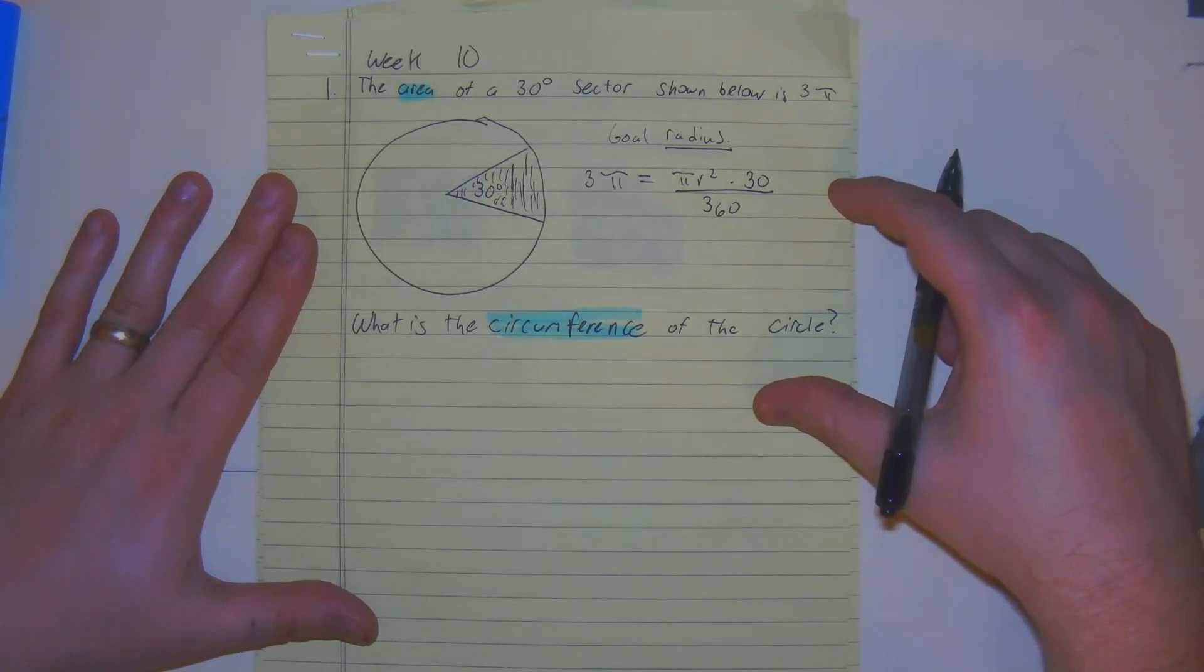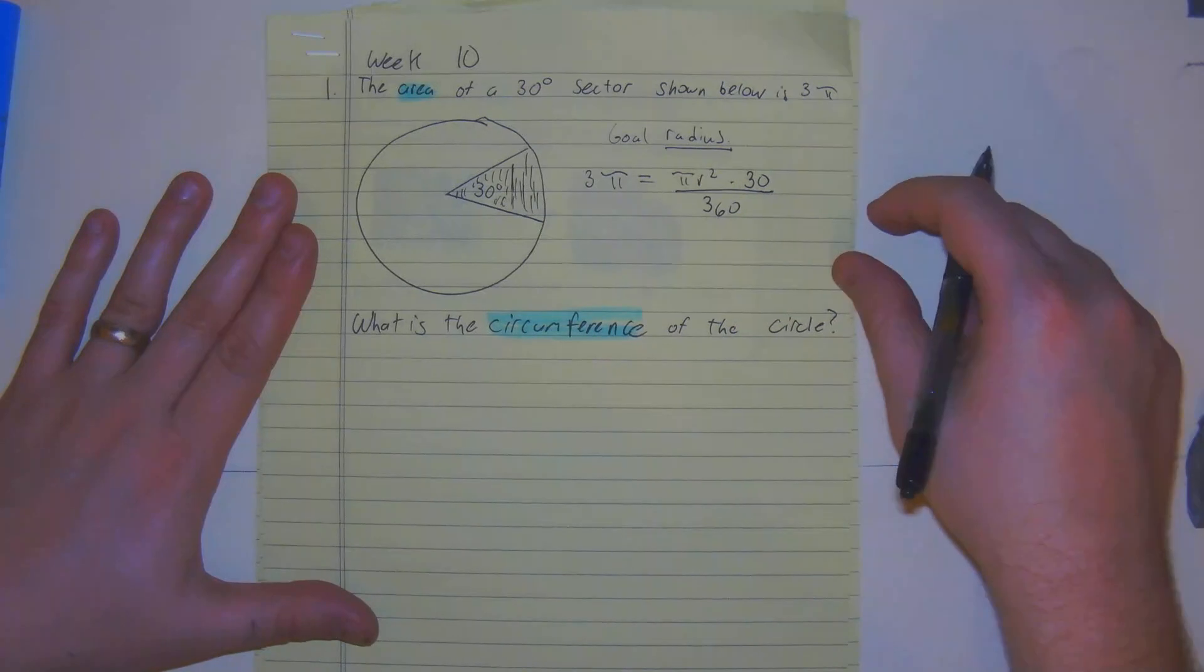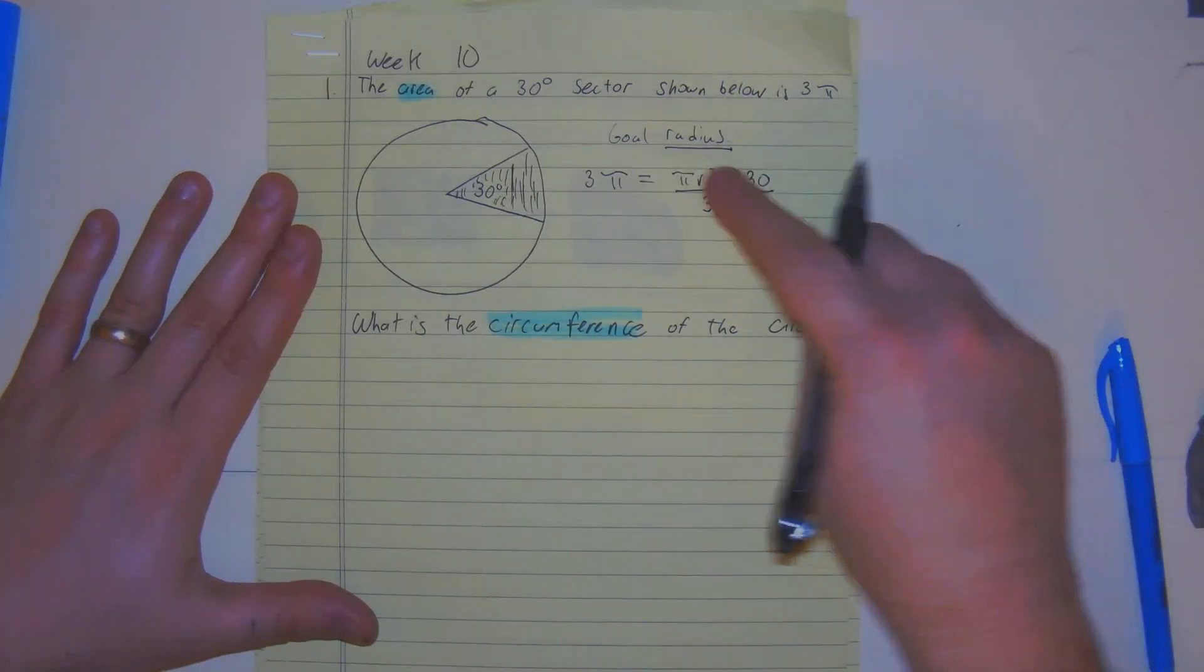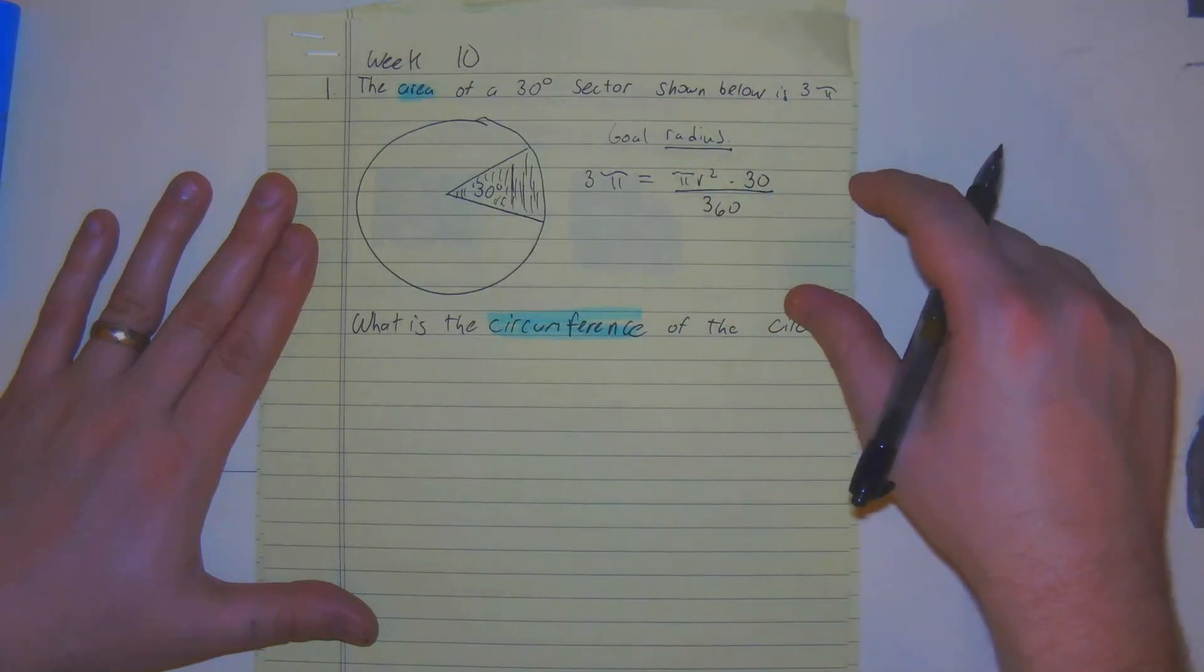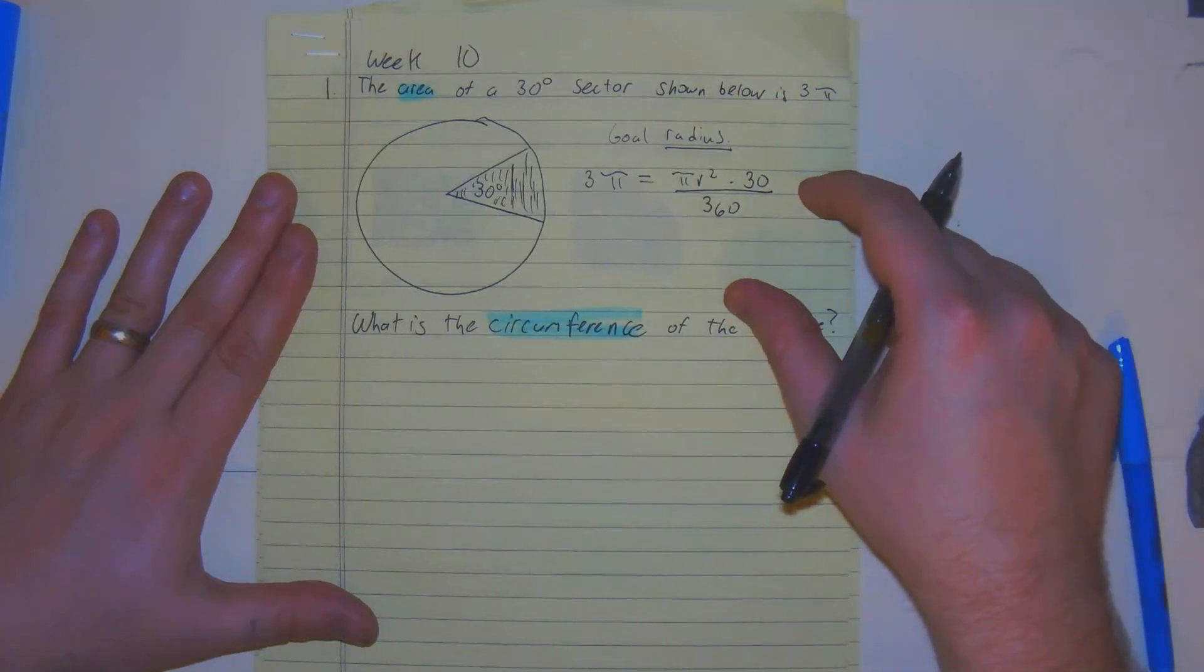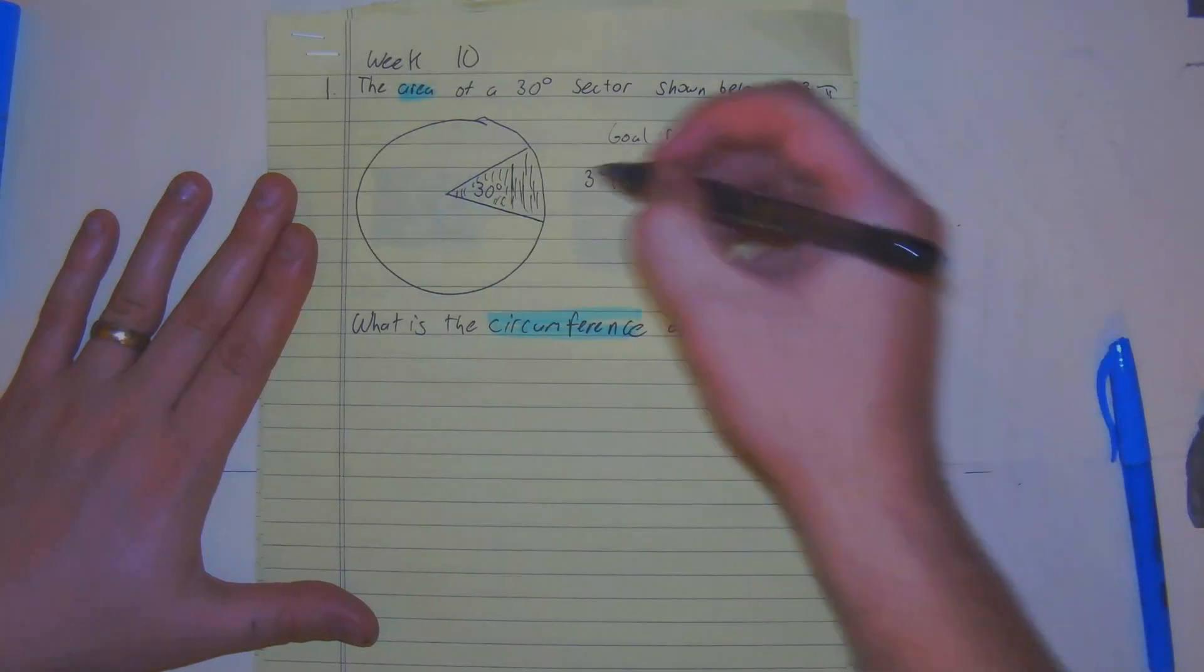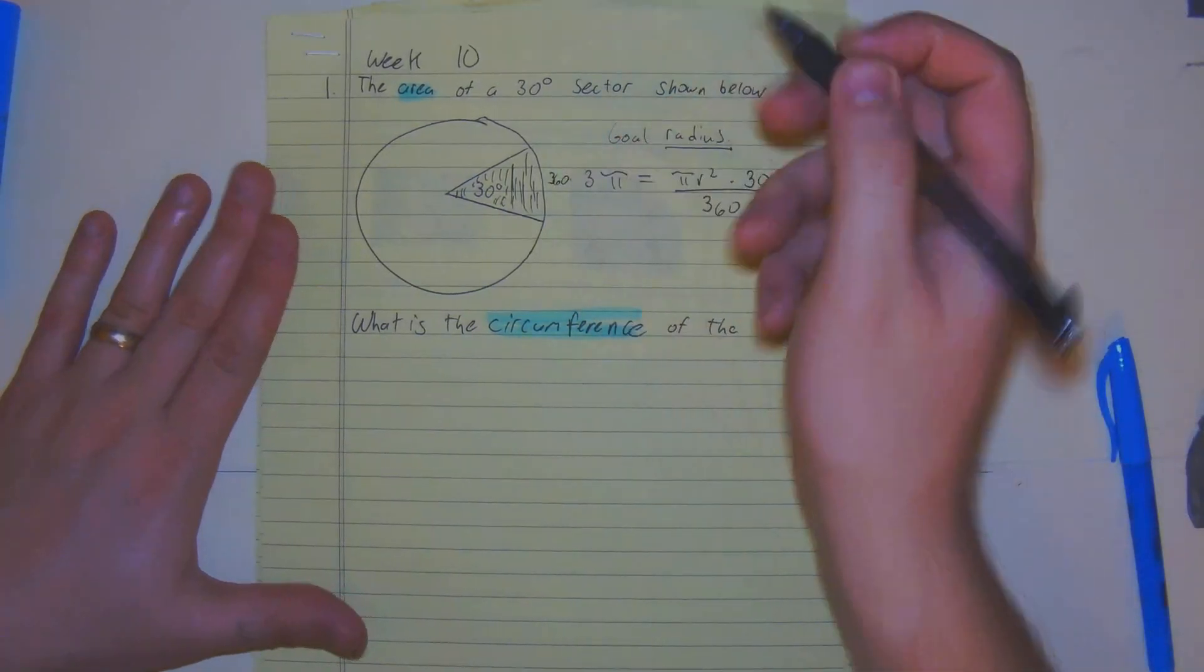The first thing I see that we need to do to get R by itself is we need to multiply both sides by 360. And again, this is the sector formula. We're going to multiply both sides by 360 because we want to get that 360 out of the denominator.